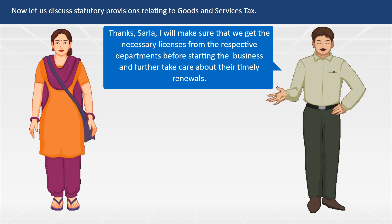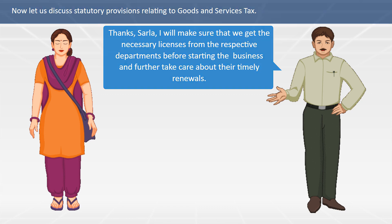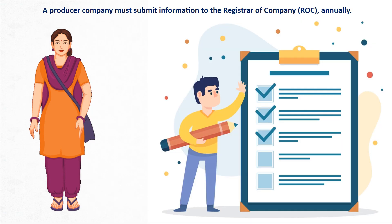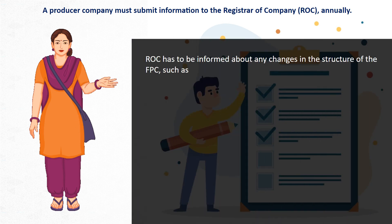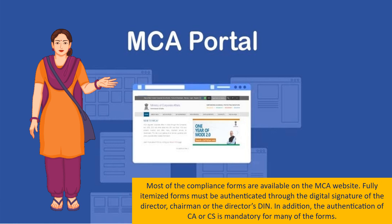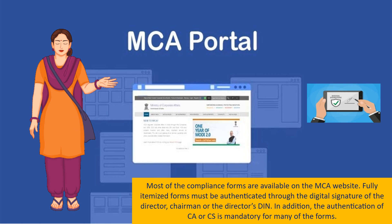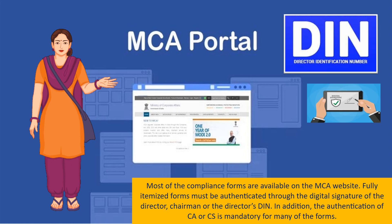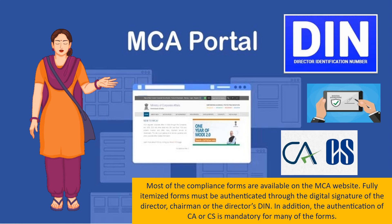Thanks, Sarla. I will make sure that we get the necessary licenses from the respective departments before starting the business and take care of their timely renewals. A producer company must submit information to the Registrar of Companies (ROC) annually. The ROC has to be informed about any changes in the structure of the FPC such as governance, capital, board and business, through submission of the appropriate forms. Most of the compliance forms are available on the MCA website. Fully completed forms must be authenticated through the digital signature of the director or chairman using the director's DIN. In addition, authentication of a CA or CS is mandatory for many of the forms.